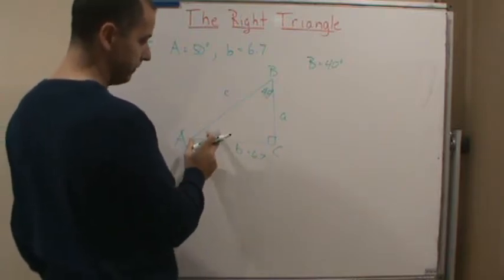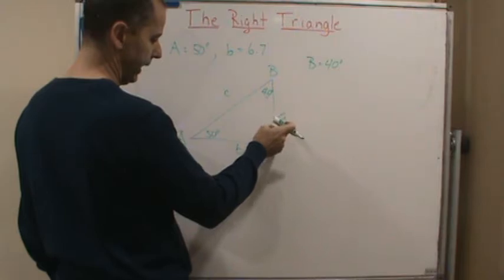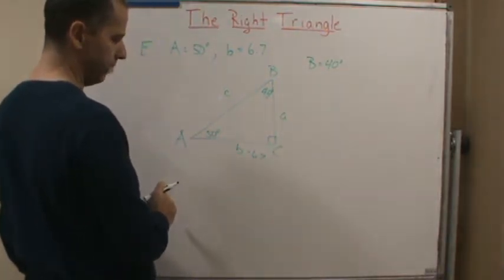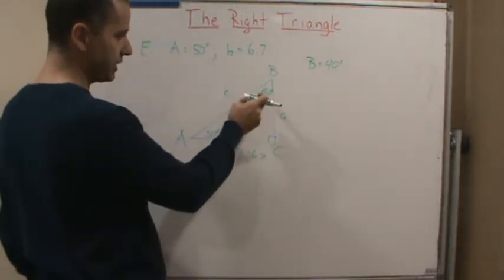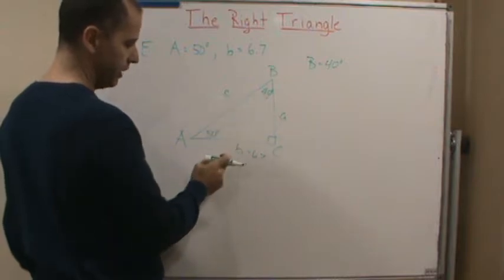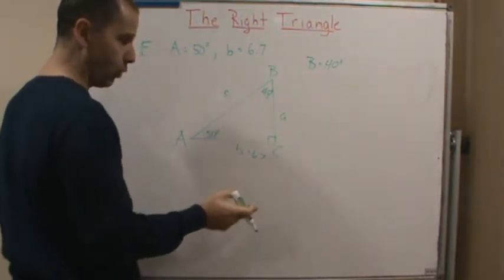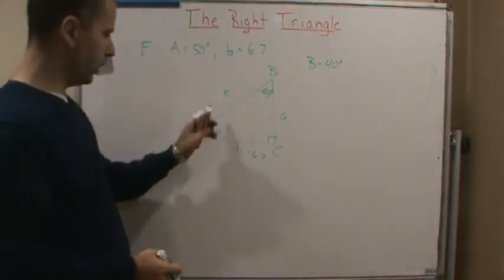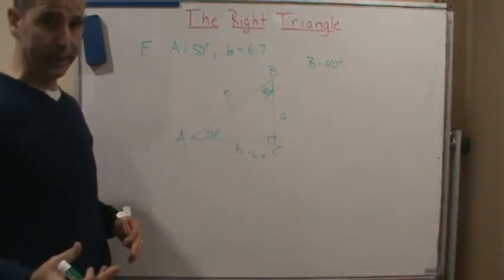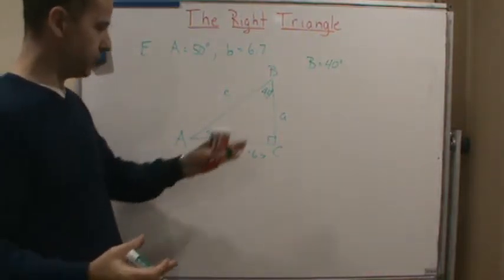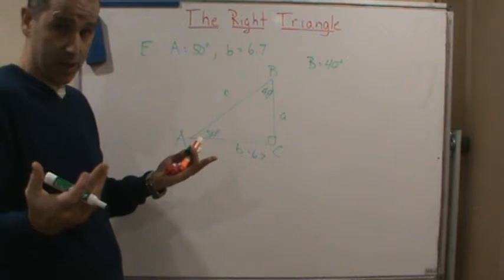Right? Tangent of 50 equals A over 6.7, right? A over B. Or we could use tangent of 40, which is B over A, right? So either one of those will work fine, because we don't know the hypotenuse, so we can't use anything that has hypotenuse, so we're stuck with tangent, right?